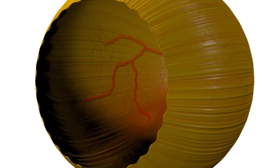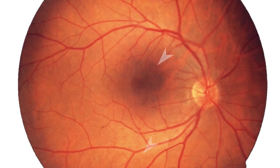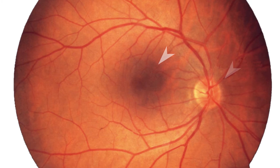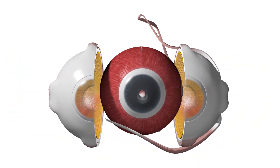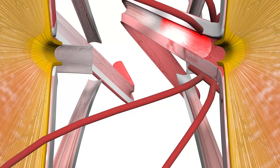The retina, macula, choroid, and optic disc are sometimes referred to as the retinal fundus, or simply fundus. Optic disc: the portion of the optic nerve visible within the eye, composed of axons whose cell bodies are located in the ganglion cell layer of the retina.